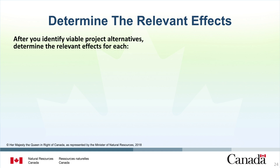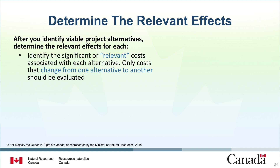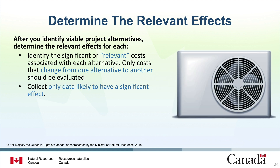Now that you have identified the most viable project alternatives, you are ready to determine relevant effects for each. Start by identifying the significant or relevant costs associated with each alternative. Only costs that change from one alternative to another should be evaluated. Focus on collecting data likely to have a significant effect on the lifecycle costs of an alternative. Costs that remain the same do not affect the lifecycle costs relative to the base case and therefore do not need to be included. For example, if two different pieces of equipment have the same maintenance and repair costs, do not include these costs in your analysis. Unless costs have significant value with significant impact, exclude them from your analysis — this will save time and result in the same conclusion.